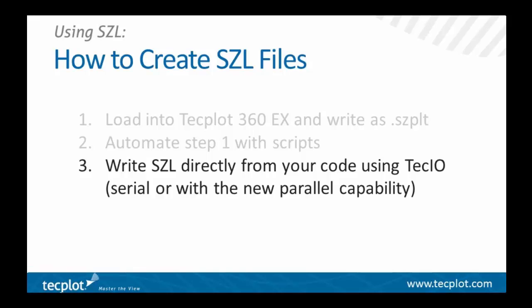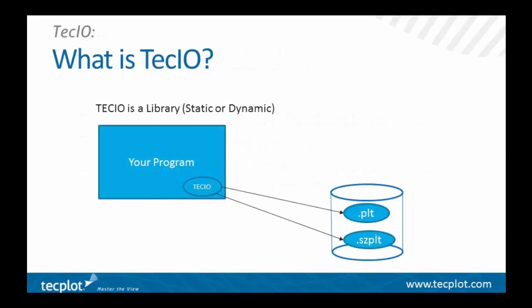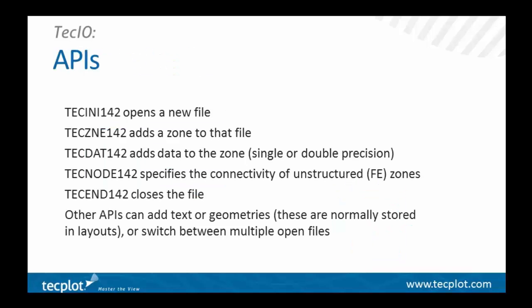So what is TechIO? It's a library that you link into your program. The source code is available for download on the website, and you can build it yourself as a static library on any of the supported platforms — and actually on quite a few other related platforms. Here are the basic APIs you call from your code to create a TechPlot data file.